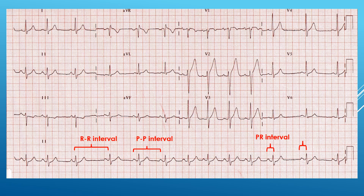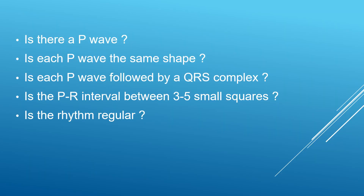These are the findings you should be looking at to reach your diagnosis. You have to look at the P waves — their morphology, their axis, whether they are sinus or not. Next, is each P wave followed by a QRS complex? Is the PR interval within normal limits or prolonged? And finally, is the rhythm regular or irregular? We'll look at all these parameters in our ECG.